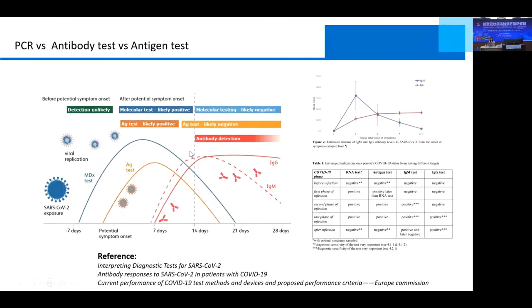These curves show PCR, antibody test, and antigen test over time after infection. In the early stage, nucleic acid and antigen can be detected within seven days. After 14 days, the concentrations of these two types decrease. Antibodies elevate after 21 days, and IgG continues to be high after 28 days. This means for early infection detection, we should choose PCR or antigen testing.